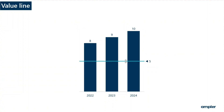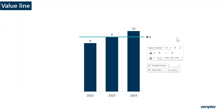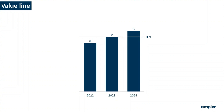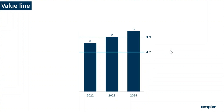Double click on the value line to have it revert back to the average. You can add multiple value lines from the context menu or by holding control and dragging while the line is selected.